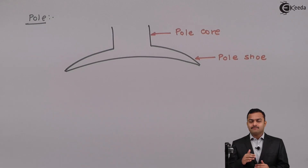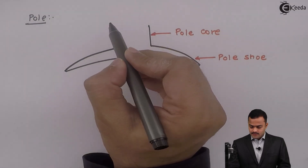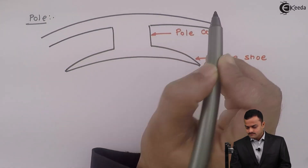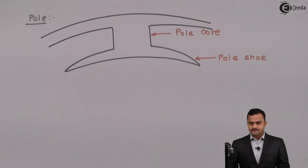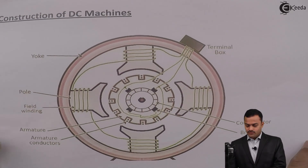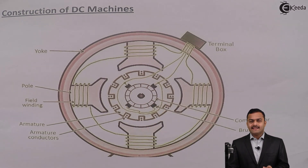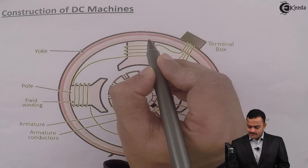The pole is made of thin laminated sheets stamped together and ultimately joined to the yoke. The yoke is joined to the poles, and the poles carry the field winding. Field winding is nothing but a coil or wire which carries current, and that current is responsible for the production of flux.